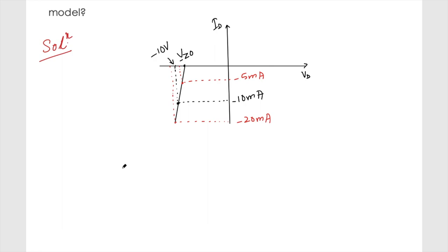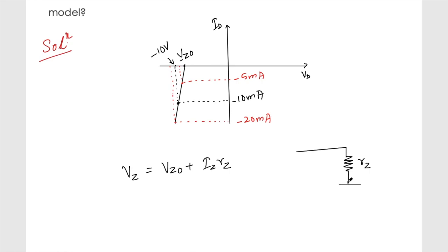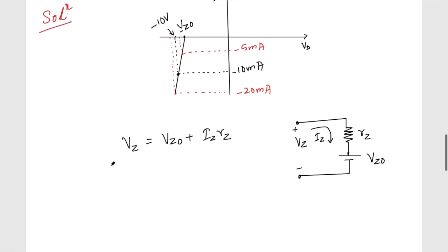For the Zener diode, vz equals vz0 plus iz times rz. In the equivalent circuit model, we have incremental resistance rz and vz0. Note that vz is basically minus vd, and iz is minus id, so we must be careful with sign conventions. The voltages are reflected into the first quadrant for the Zener model.